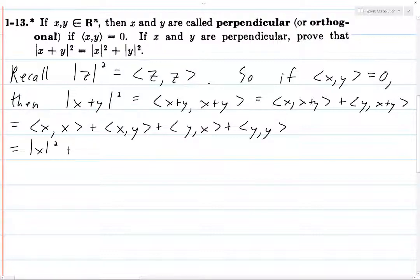The norm of x squared plus two times the inner product of x and y, plus the norm of y squared.